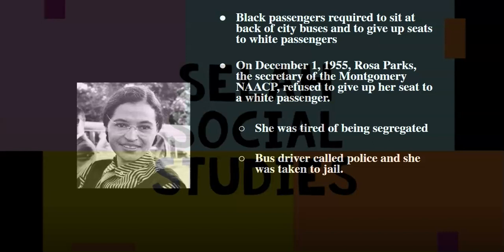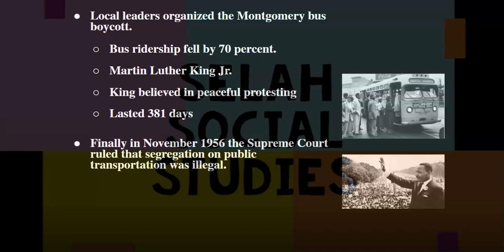Immediately after Parks' arrest, local leaders began to organize the Montgomery Bus Boycott. Word spread for the African American population of Montgomery to boycott public transportation on the day of Parks' trial. Leaders hoped for up to 50% participation, but in reality were supported by over 90%. Thousands of African Americans stopped riding buses altogether, instead ride-sharing, walking, and riding bikes to reach their destinations. The boycott lasted 381 days. The public transportation system began to suffer economically because it relied heavily on African American riders. During the boycott, city officials tried to sabotage its success by arresting King, police brutality, and house bombings — including King's. Finally, in 1956, the Supreme Court ruled that segregation on public transportation was illegal.